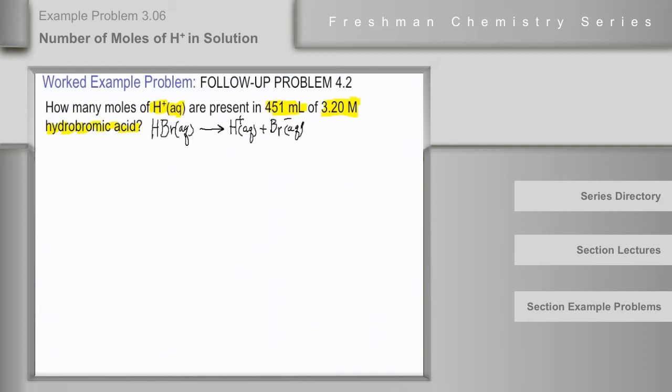Our task, then, is to first of all take the volume of HBr aqueous, and this needs to be in liters, and convert that to moles of HBr, and then finally convert moles of HBr to moles of hydrogen ion in aqueous solution. That is the strategy.